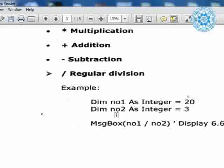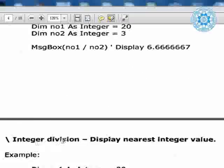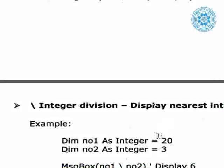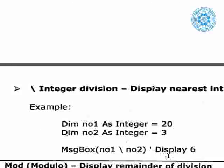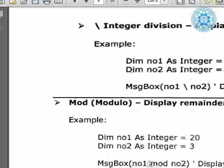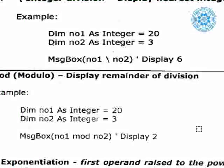Here you know: `number1 as integer = 20`, `number2 as integer = 6` — wait, it's `number2 as integer = 6`. `msgbox(number1 mod number2)` displays 2. Because 3 times 6 is 18, and when we divide 20 by 6 — 6 times 3 is 18, 20 minus 18 is 2. So the remainder is 2. Friends, it is really very simple to understand the modulus operator.